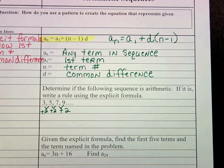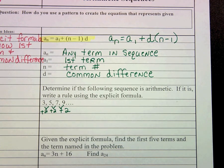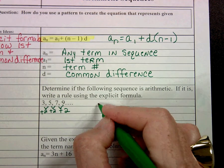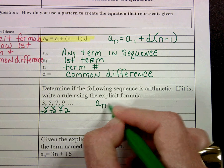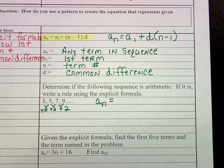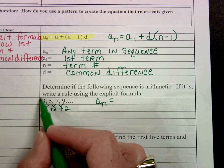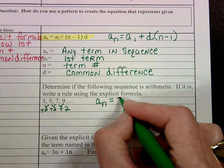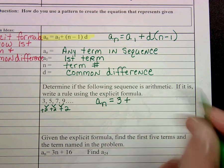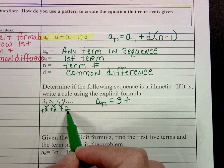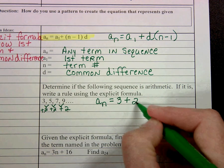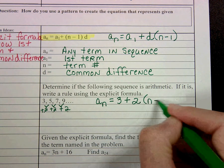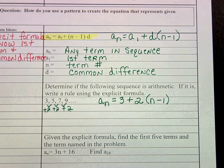And so we're going to write a rule using the explicit formula, and you're going to see how easy this is. So we would say a sub n equals a sub 1 is our first term, so notice our first term is 3, plus the common difference, d, was 2, so 2 times n minus 1. And that's it. That's the explicit formula.